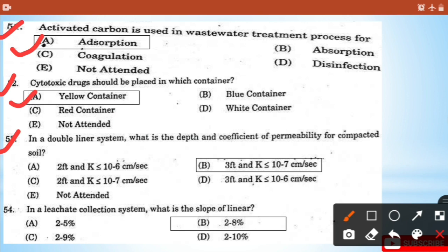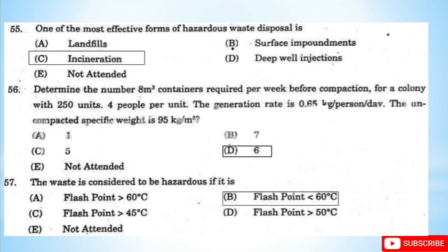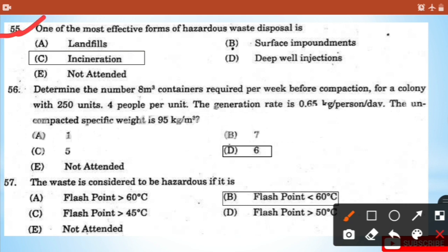Question 53: In a double liner system, what is the depth and coefficient of permeability for compacted soil? - That is option B: three feet and k less than or equal to 10 to the power -7 centimeters per second. Question 54: In a leachate collection system, what is the slope of the liner? - That is option B: 2 to 8 percent.